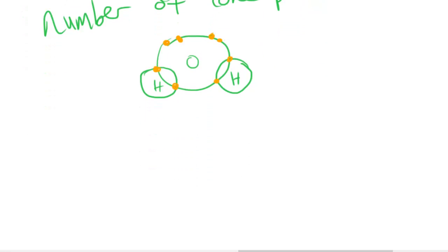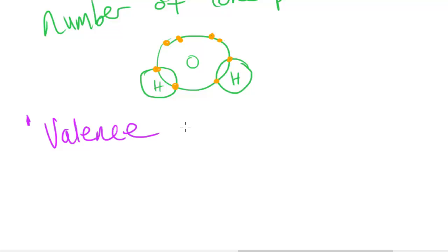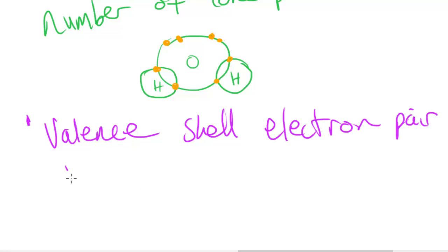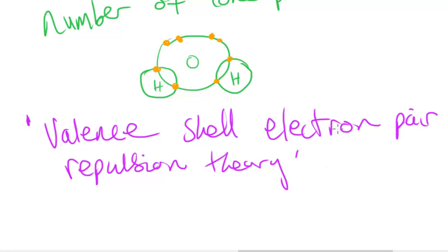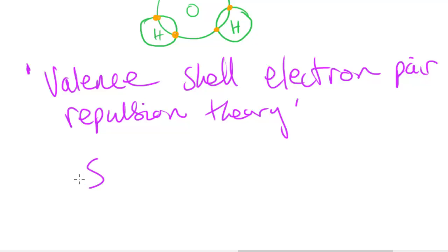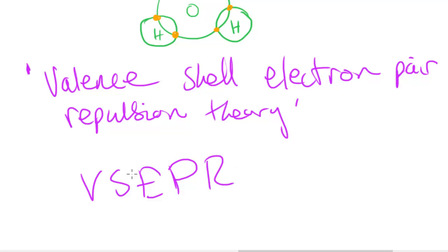The name for this theory — the idea of trying to predict bond angles and molecular shapes — is valence shell electron pair repulsion theory. Sometimes it's shortened to VSEPR theory, just because the full name is so long.